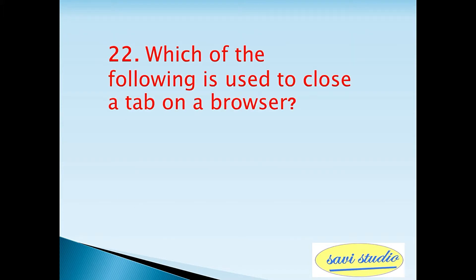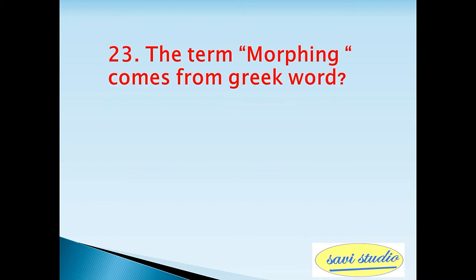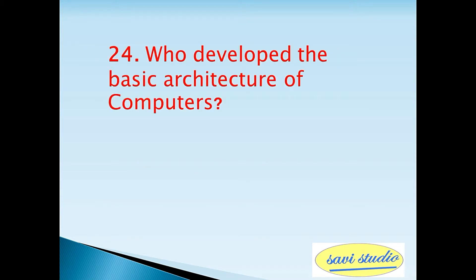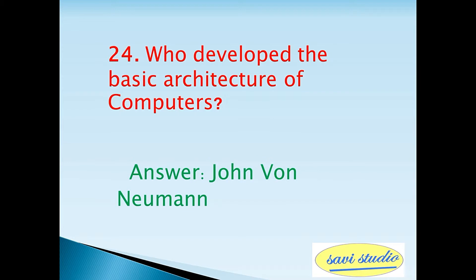Twenty-second question: which of the following is used to close a tab on a browser? Answer: Control plus W. Twenty-third question: the term morphing comes from which Greek word? Answer: Morphe. Twenty-fourth question: who developed the basic architecture of computers? Answer: John Von Neumann.